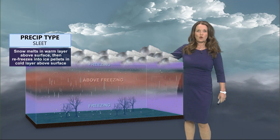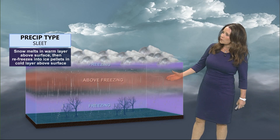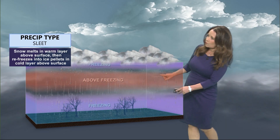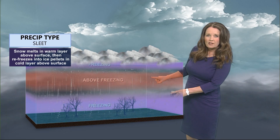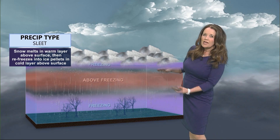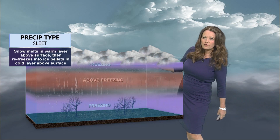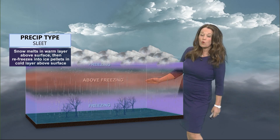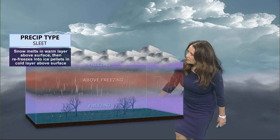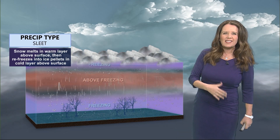With sleet, snow is being produced by the clouds and then it falls into a shallow area of warm air — this warm air is called an inversion. It's a shallow area but just warm enough for the snowflake to actually melt a little bit or all the way, and then as it falls into the area that's below freezing it will refreeze.